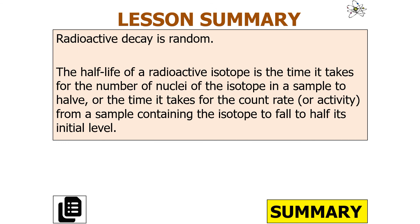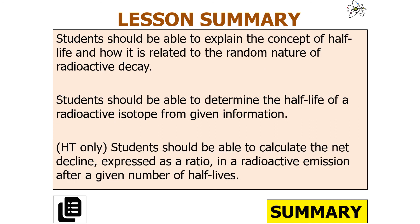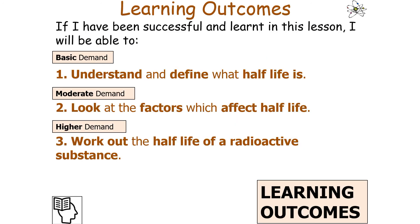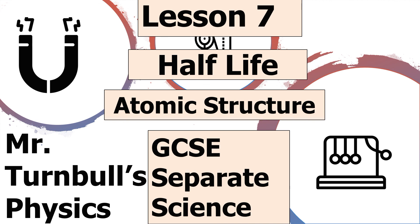Radioactive decay is random, and the half-life of a radioactive isotope is the time it takes for the number of nuclei in a sample to halve, or for the count rate or activity to fall to half its initial level. You should be able to explain the concept of half-life and its relation to the random nature of radioactive decay, determine the half-life from given information, and — for higher-tier students — calculate the net decline as a ratio after a given number of half-lives. Thank you very much for listening to today's lesson on half-life.